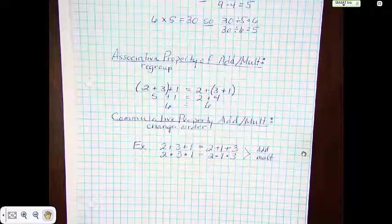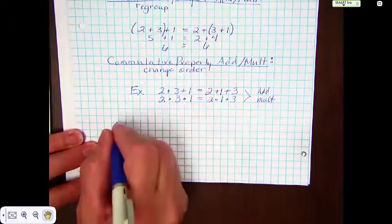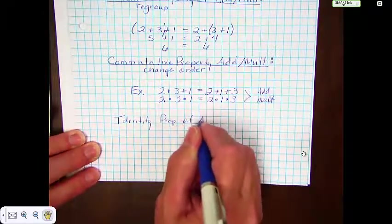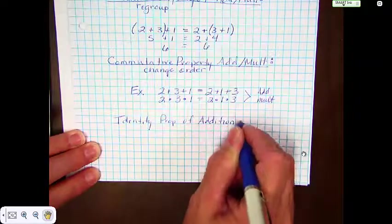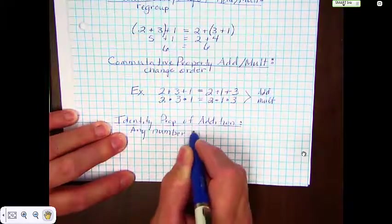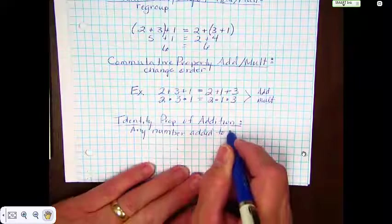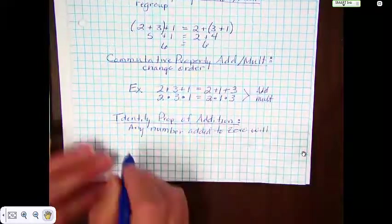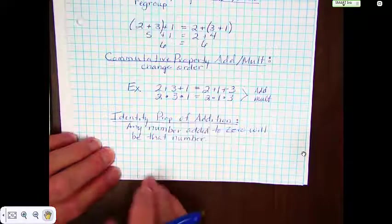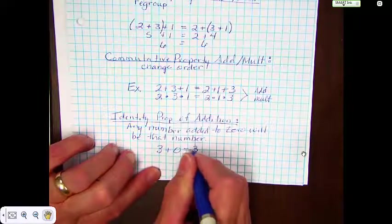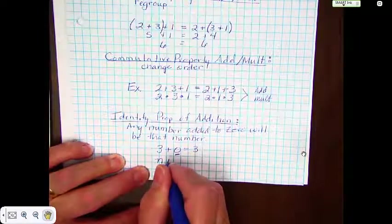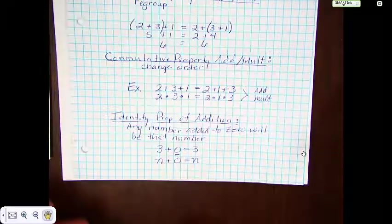Another property that we need to know is called the identity property of addition. The identity property says that any number added to 0 will be that number. A quick example would be 3 plus 0 equals 3 — there's your identity. Same thing with a variable: n plus 0 equals n — there's your identity.